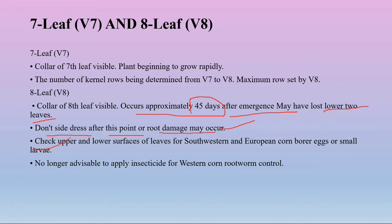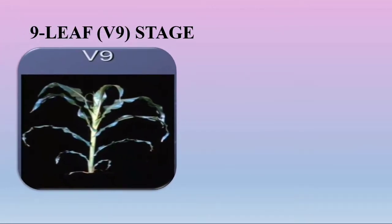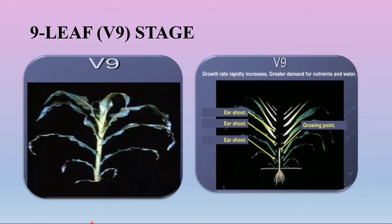Check upper and lower surfaces of the leaves for western, southwestern, and European corn borer eggs or small larvae. It is no longer advisable to apply insecticides for western corn rootworm control. In the ninth leaf stage (V9), the collar of the ninth leaf is visible and ear shoots are visible in the leaf axils — the plant may have up to eight ear shoots. The tassel is rapidly developing and corn borer feeding damage should be evident on leaves. Growth rate rapidly increases in this stage, creating greater demand for nutrients and water.